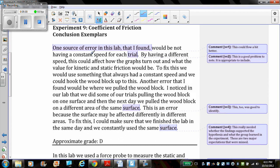This student wrote, one source of error in this lab that I found would not be having a constant speed for each trial. By having a different speed this could affect how the graphs turn out and what the value for kinetic and static friction would be. To fix this we would use something that always had a constant speed and we could hook up the wood block to this. Another error that I found would be where we pulled the wood block. I noticed in our lab that we did some of our trials pulling the wood block on one surface. And then the next day we pulled the block on a different area of the same surface. This is an error because the surface may be affected differently in different areas. To fix this I could make sure we finish the lab in the same day and we constantly use the same surface.